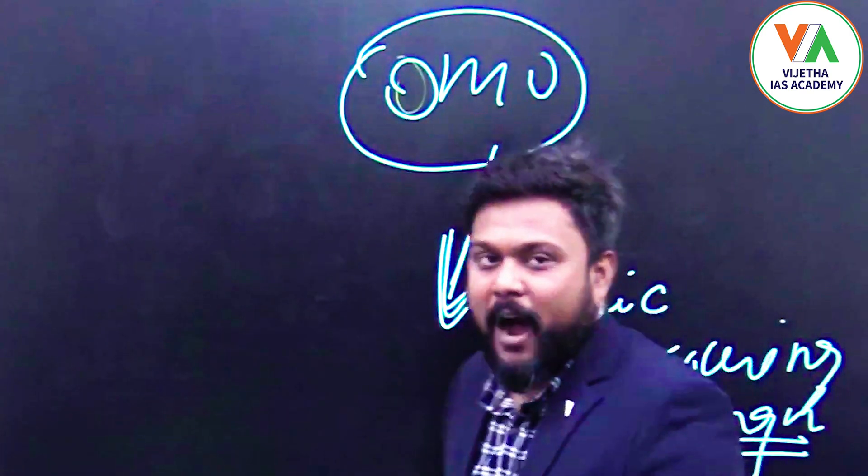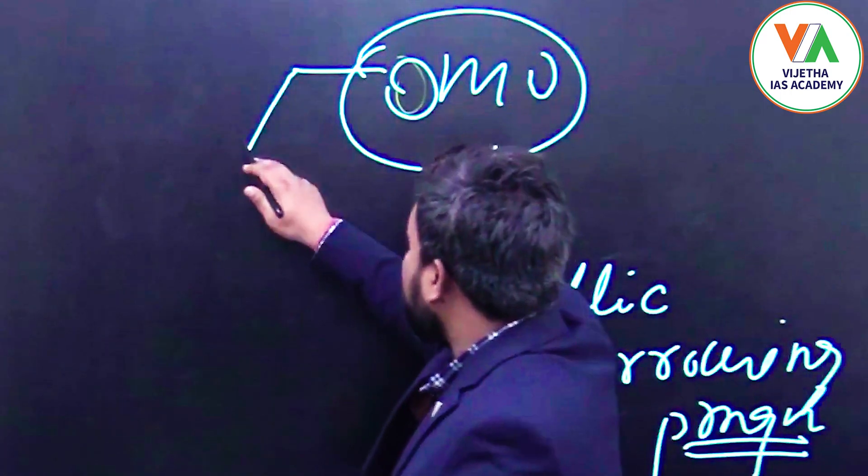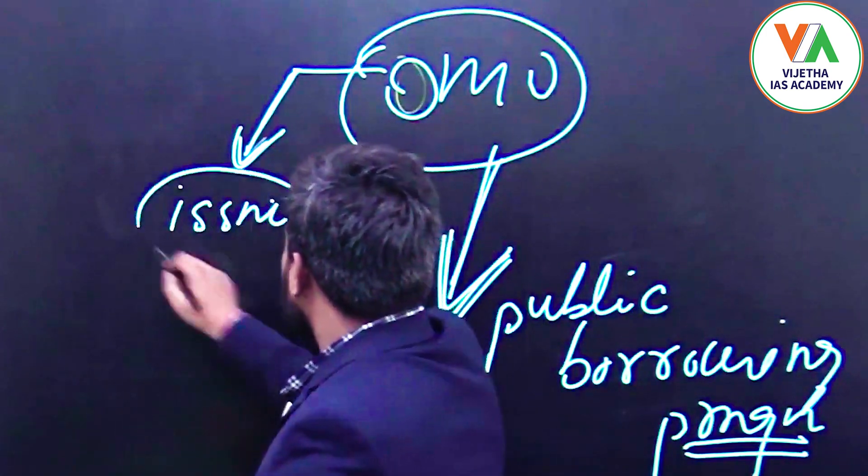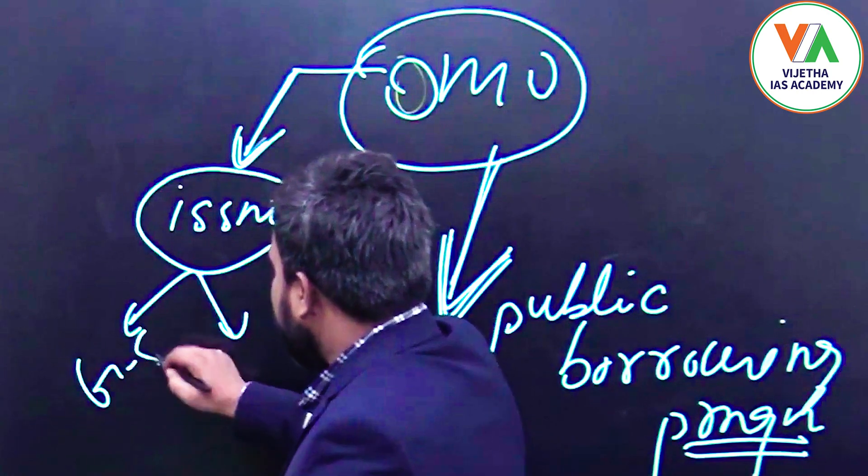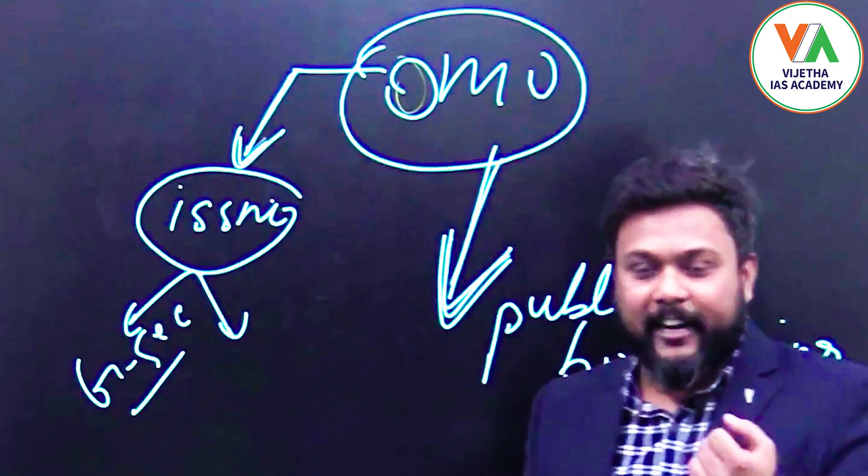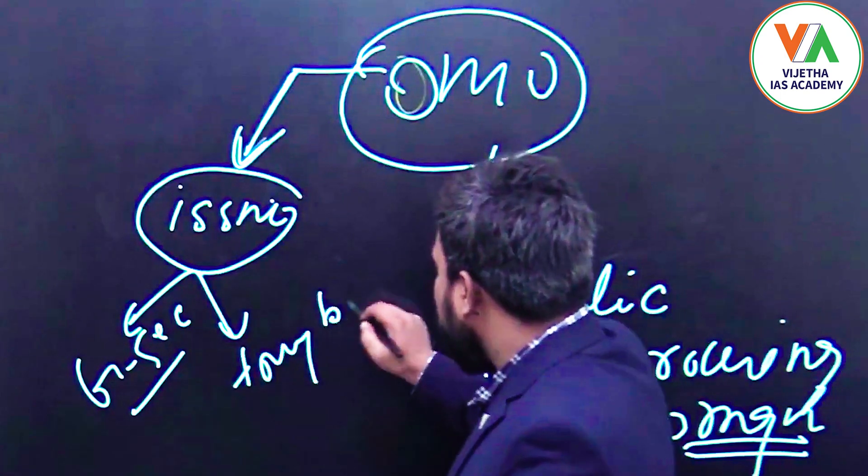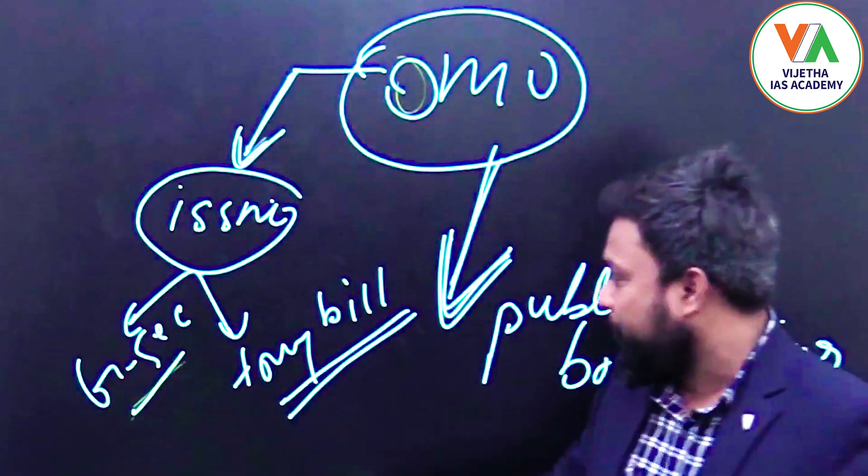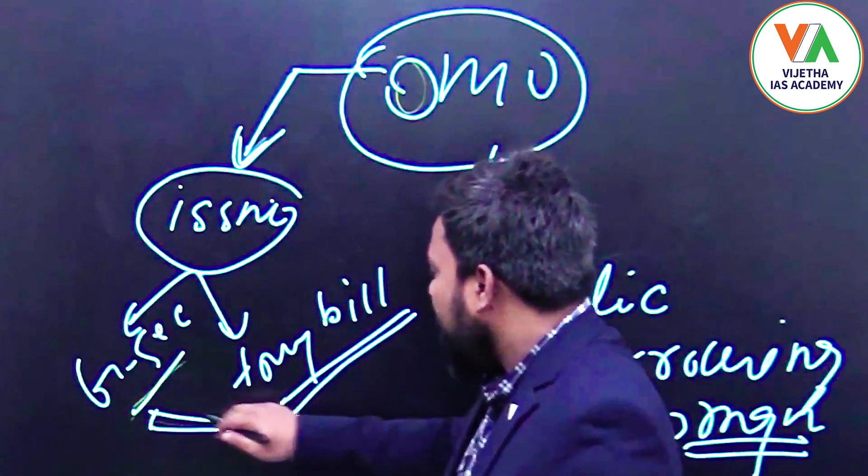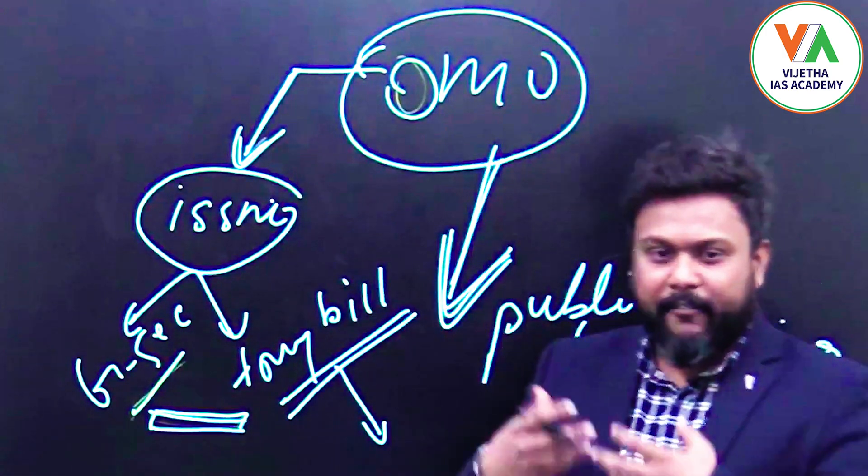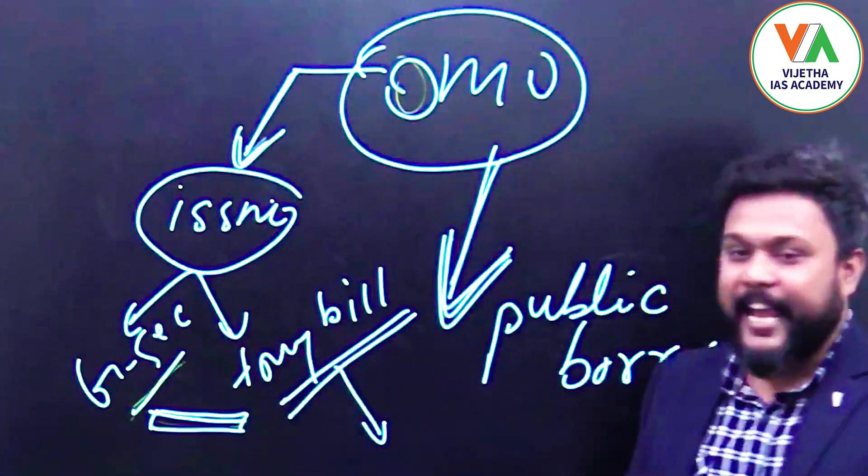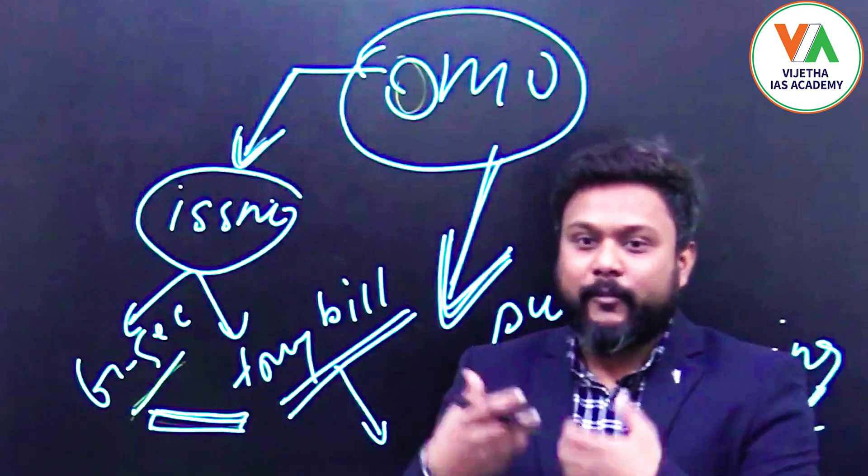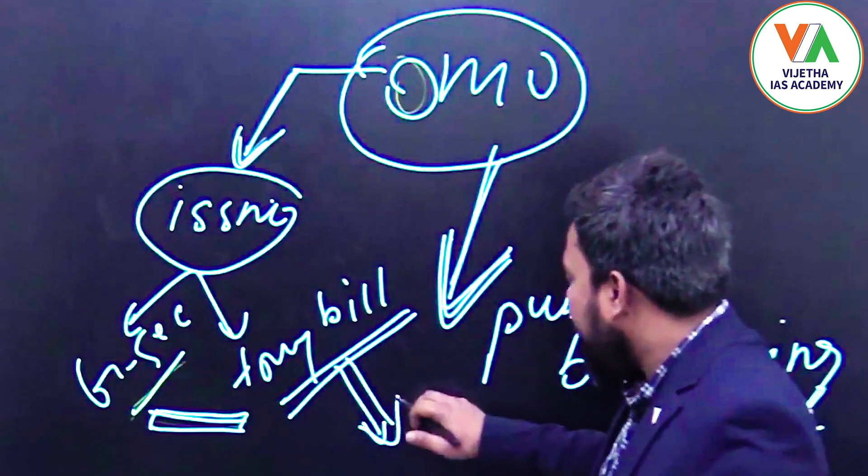In this open market operation, the government, or I would say the RBI on behalf of the government, issues GSec, which is government security or gilt-edged securities, and treasury bills to manage the finances of the government. When the government releases or issues these instruments in the market, the public or different financial institutions buy these GSec or these securities. In doing so, the government sucks extra money which was there in the economy to manage its finances.